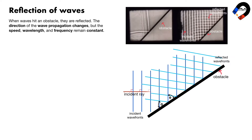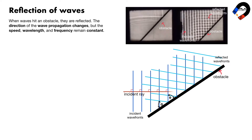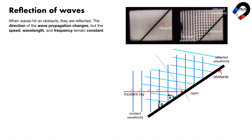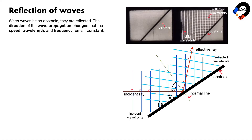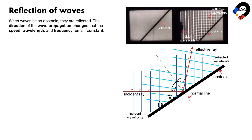Draw the incident ray perpendicular to the incident wave fronts — its direction is the direction of wave propagation and energy transfer. Draw the normal line at right angle to the surface of the obstacle. The angle of incidence I is between the incident ray and the normal line. Draw the reflected ray perpendicular to the reflected wave fronts — its direction is the direction of wave propagation. The angle of reflection R is between the reflected ray and the normal line. The space between consecutive wave fronts is the wavelength, which remains equal before and after reflection.